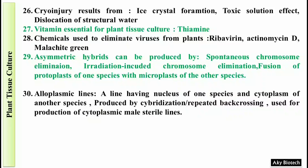Question 30: Alloplasmic lines are lines having the nucleus of one species and cytoplasm of another species. They are produced by cybridization and repeated backcrossing, and are used for production of cytoplasmic male sterile lines.